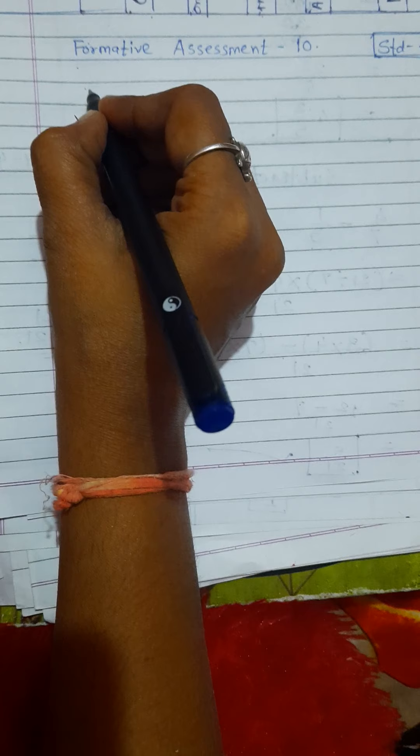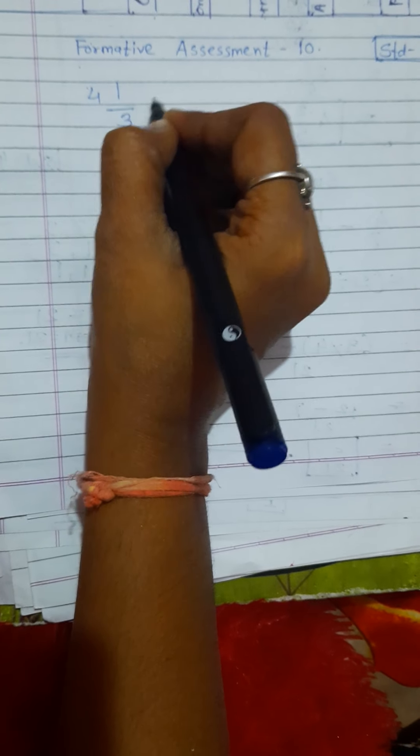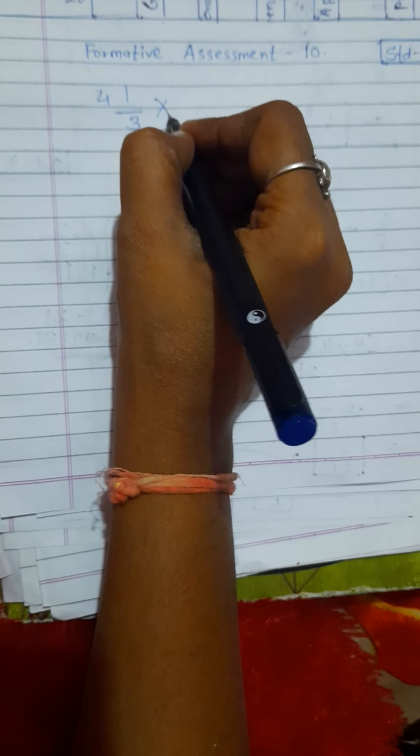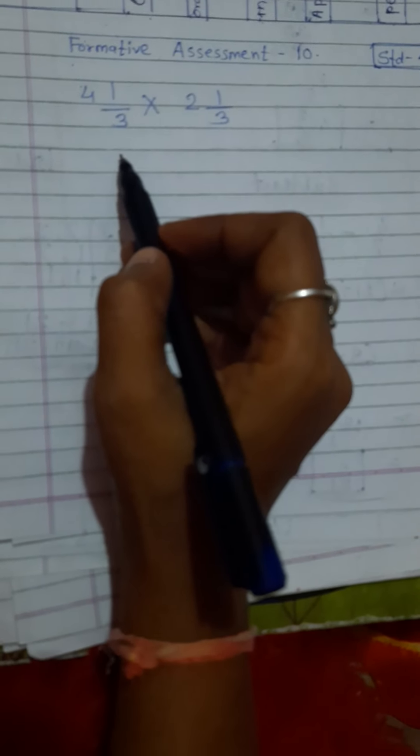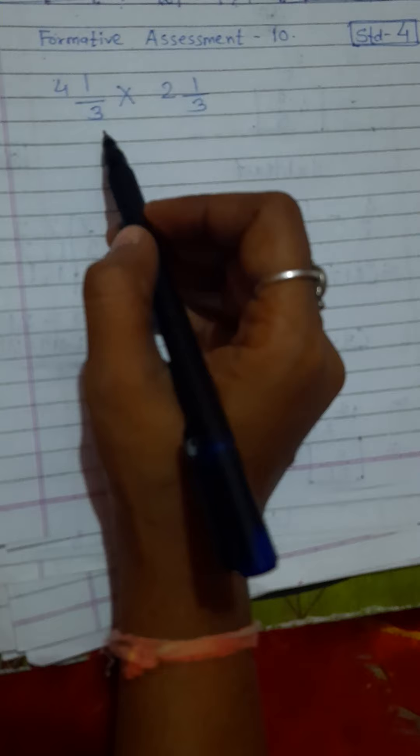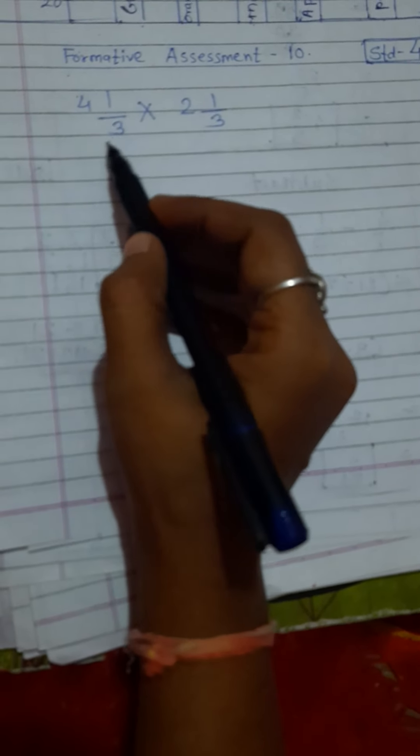Here I will write one example: 4 1/3 × 2 1/3. Look at here. They give us two fractions - that is the first fraction, that is the second fraction.